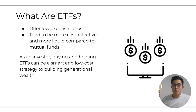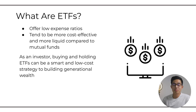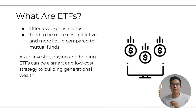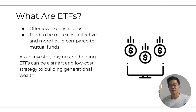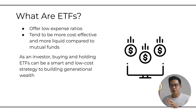One great thing about ETFs is that many of them on the market actually offer really low expense ratios. An expense ratio is pretty much the fee you're paying to the company to handle that ETF. For example, a 1% expense ratio means that for every $100 you have in that ETF, they're going to charge you a $1 fee per year. 1% is pretty high, but there are so many out there that charge as low as 0.03%. ETFs also tend to be more cost effective and more liquid compared to mutual funds and index funds.